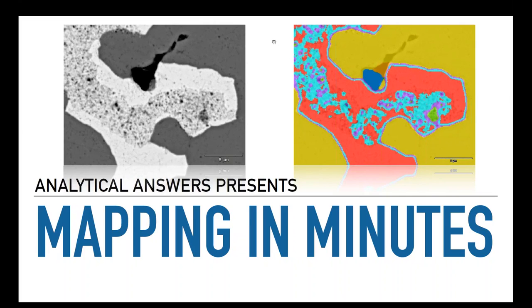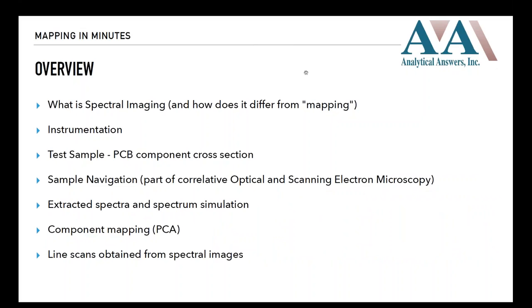We're going to be talking about mapping in minutes. I'm going to assume a basic understanding of scanning electron microscopy and how you can generate elemental composition data from that, but I'll give a little background for those not terribly familiar. We're going to cover an overview of spectral imaging, which allows us to do mapping in minutes. We'll talk about the tools we'll be using, and I have a test sample — a printed circuit board component — in the instrument with some worked examples.